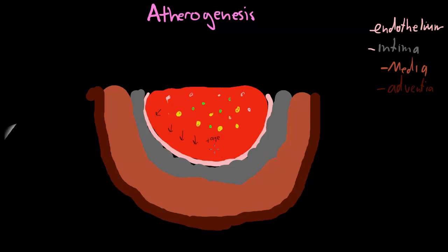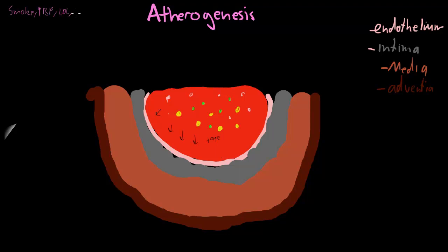Just as time goes by, the endothelium gets damaged, and age is probably the biggest risk factor of all. So we have smoking, high blood pressure, LDL — low density lipoproteins — and diabetes. These cause damage to the endothelium.